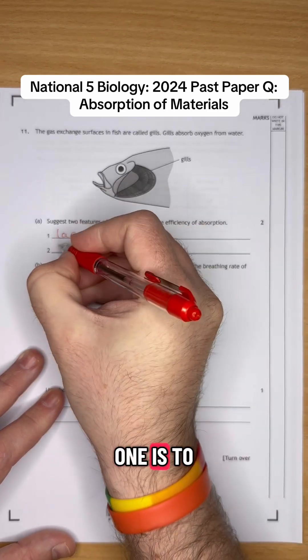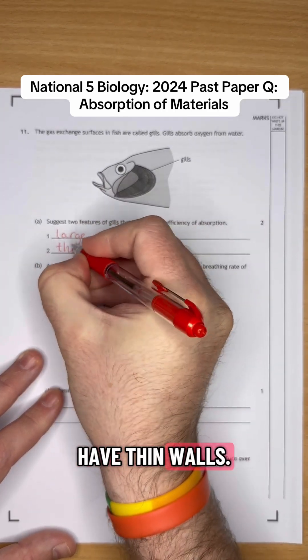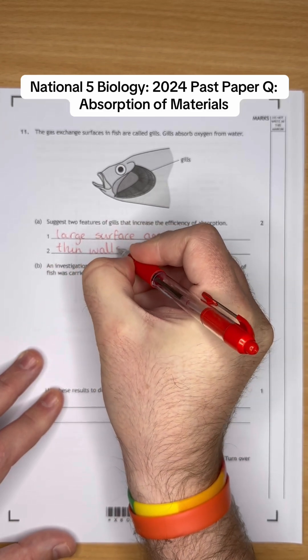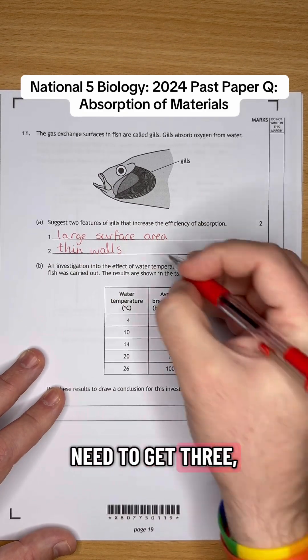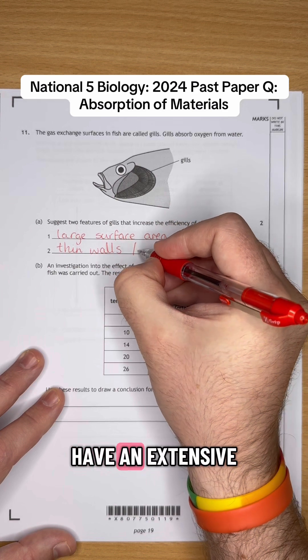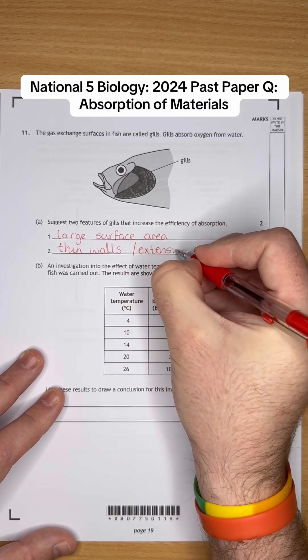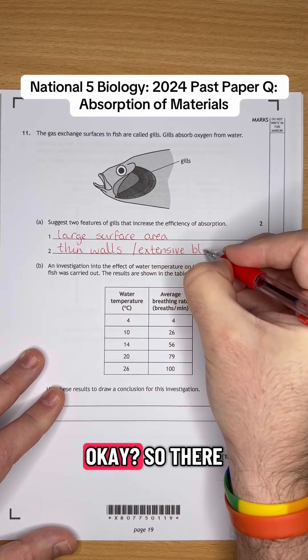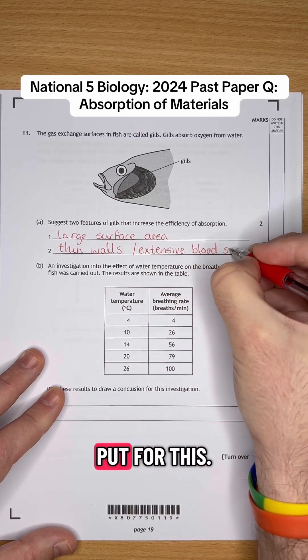Okay. The second one is to have thin walls. And the third one, you don't need to give three, but the third one is to have an extensive blood supply. Okay. So there are three options for you to put for this.